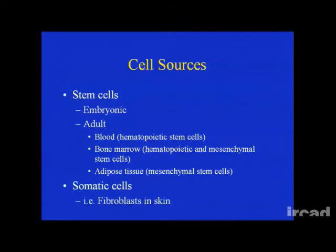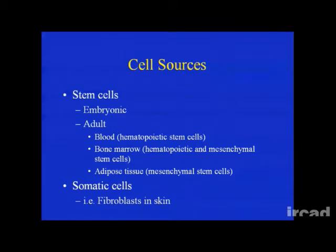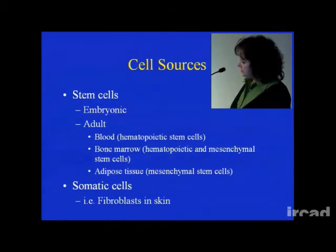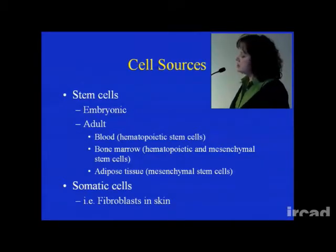Adult or somatic cells can also be used, just like the example I showed using chondrocytes seeded in a scaffold to grow cartilage — that's an example of somatic cell tissue engineering. Examples on the market include using fibroblasts in skin substitutes. So you can use adult somatic cells already differentiated, or you can utilize adult stem cells.